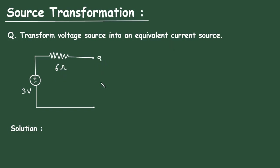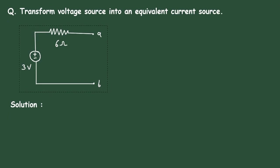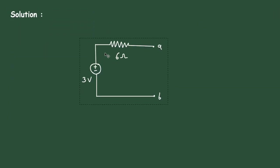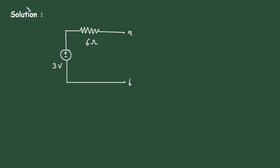Let's say this is terminal A and this is terminal B. Now let's copy this circuit. We want to convert this voltage source into its equivalent current source. This is called source transformation.